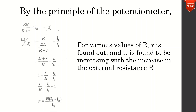Dividing equation 1 by equation 2: E divided by ER divided by R plus r gives R plus r divided by R, which equals L1 divided by L2. Therefore, R plus r equals R into L1 by L2, which simplifies to small r equals capital R into L1 minus L2 divided by L2. For various values of capital R, the internal resistance r is found out and it is confirmed that small r equals R into L1 minus L2 divided by L2.